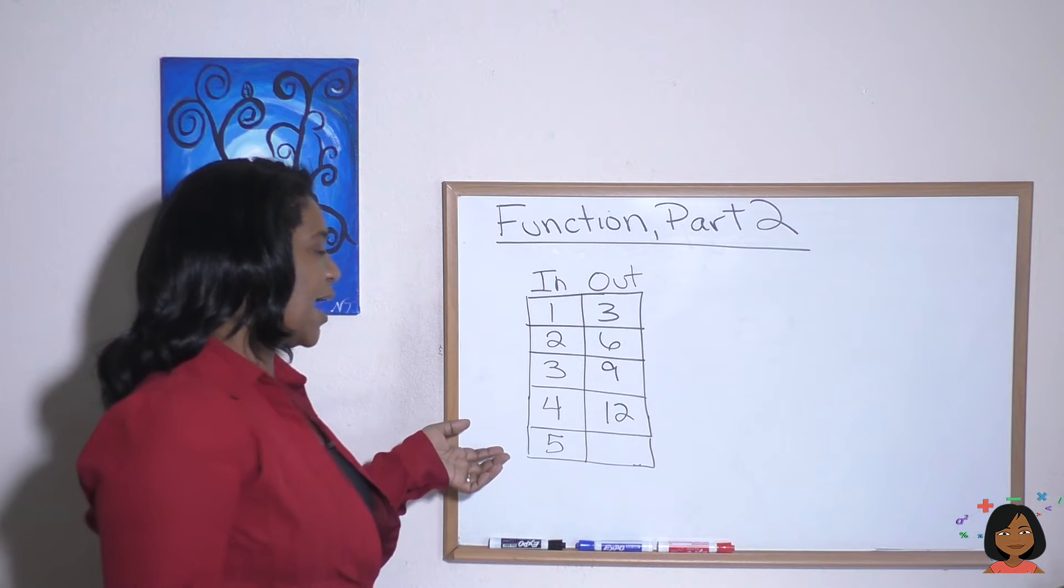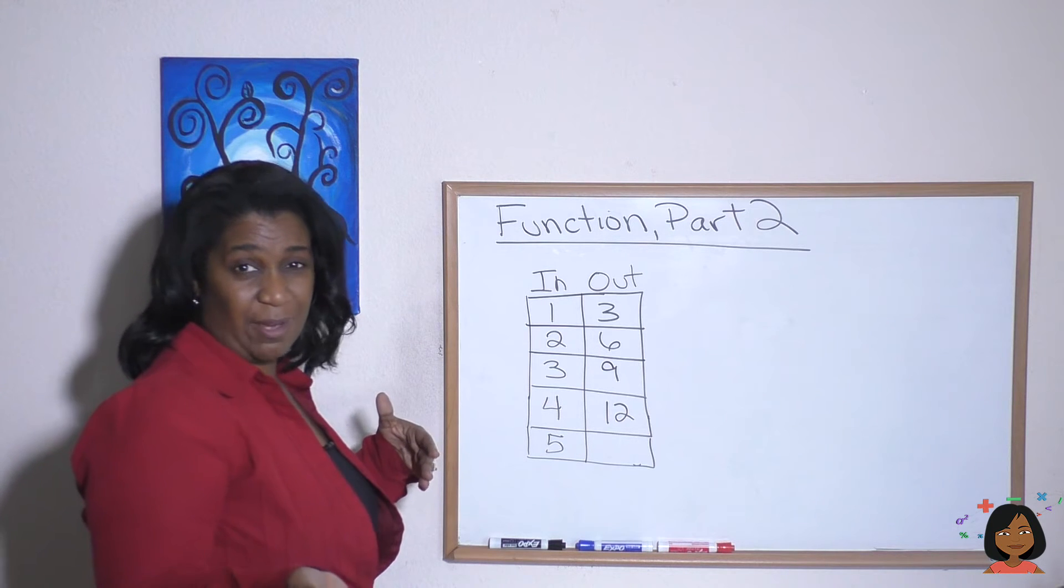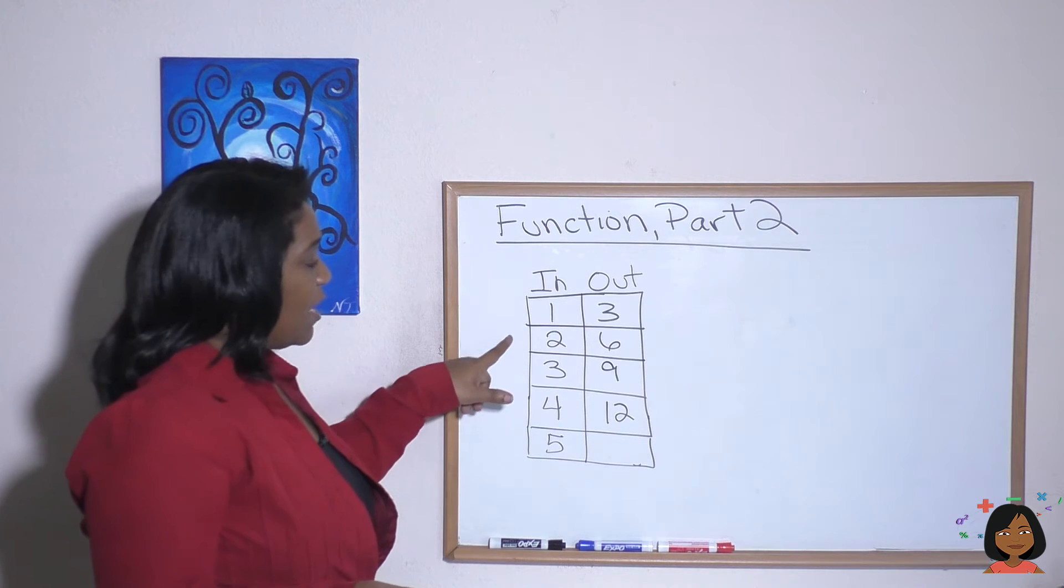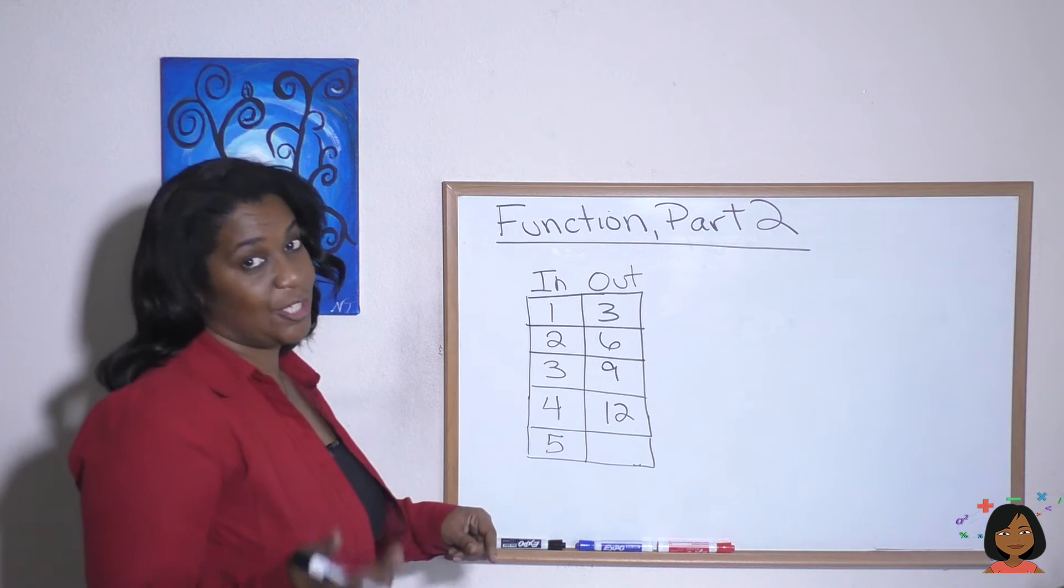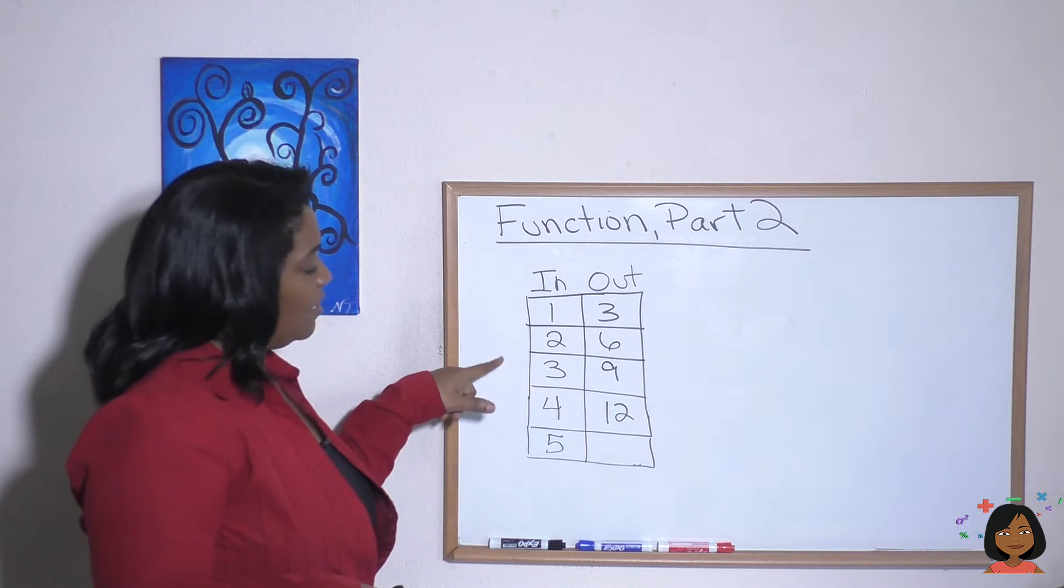Well, it could be that I either added two or I multiplied by three to get there. So let's keep going to see which one it really is. I put in two, I ended up with six. Looks like I multiplied by three to get there.